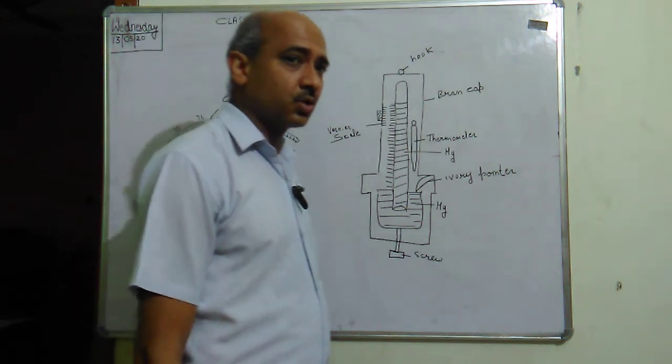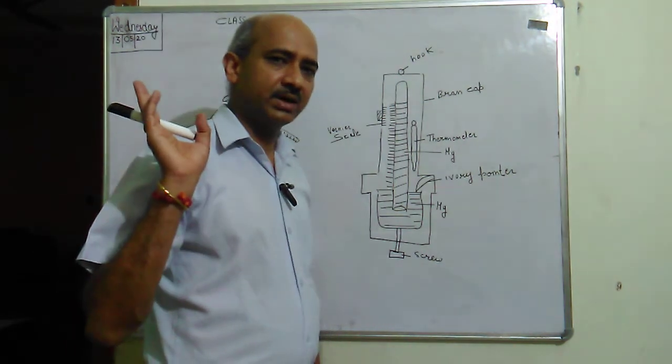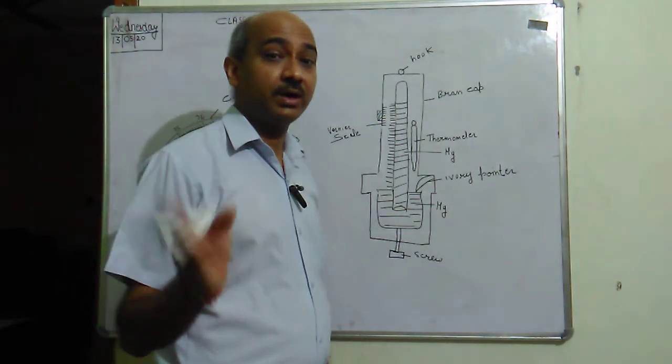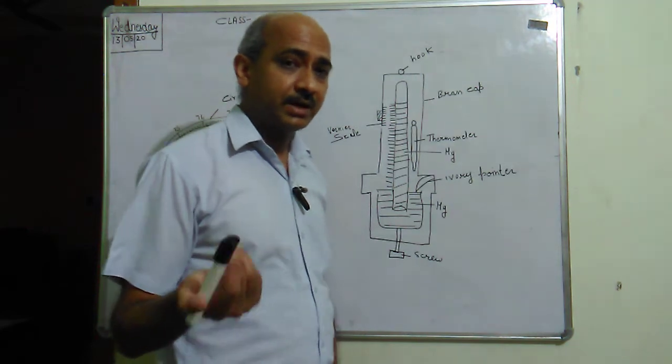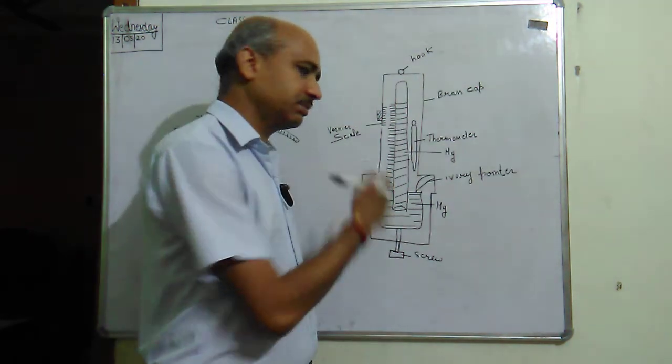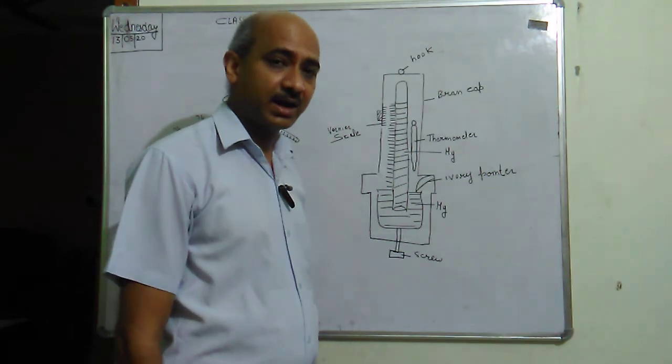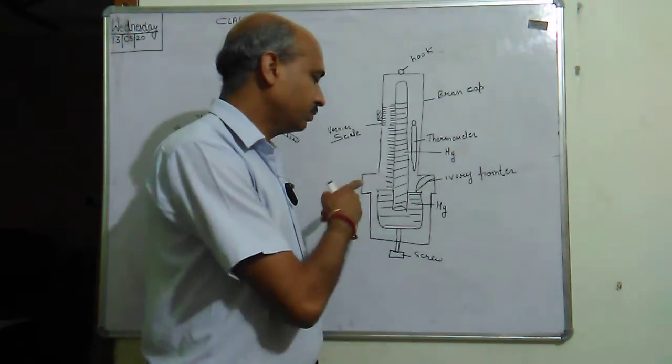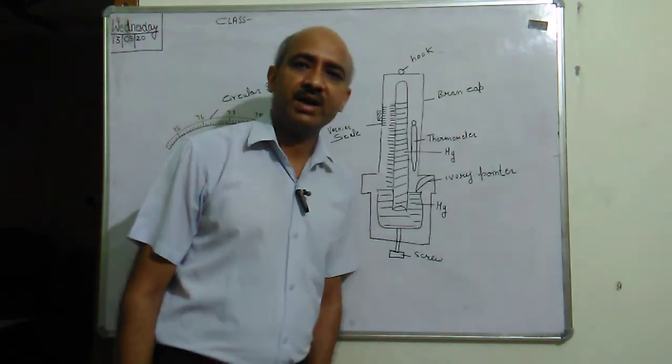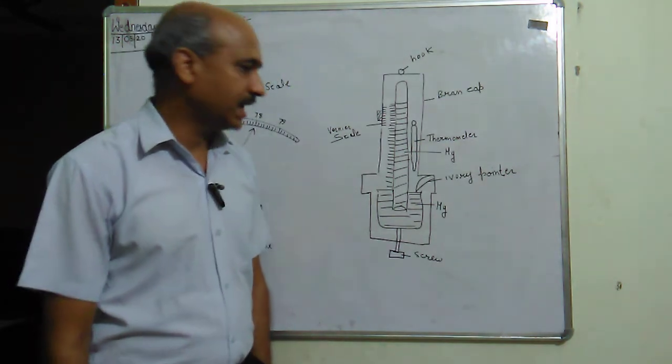In the simple barometer, the length of the tube is about 120 centimeters. We have decreased the length. In this barometer, we have taken the length of the tube to about 80 to 85 centimeters to make it more manageable.